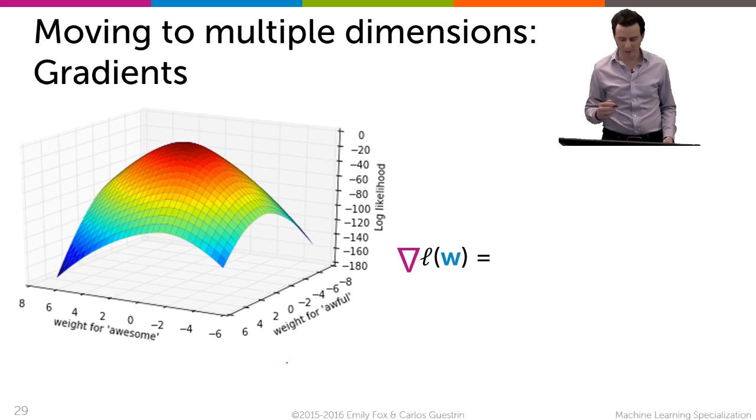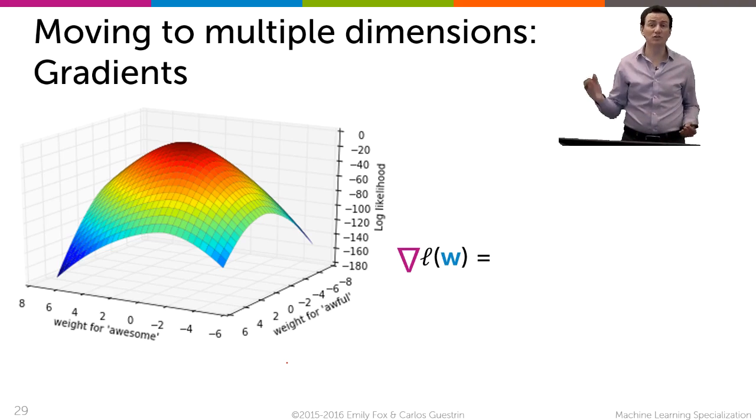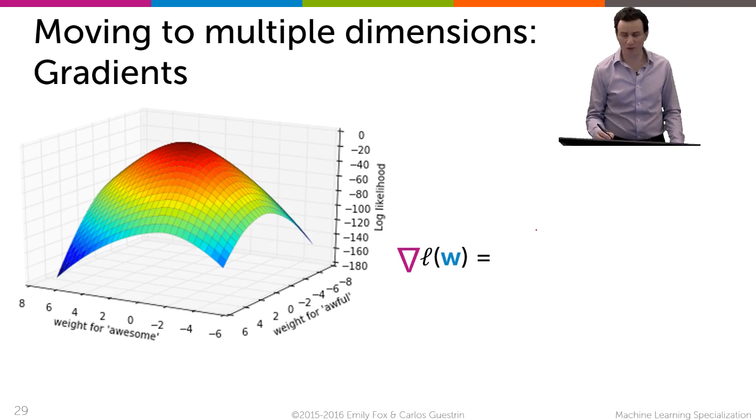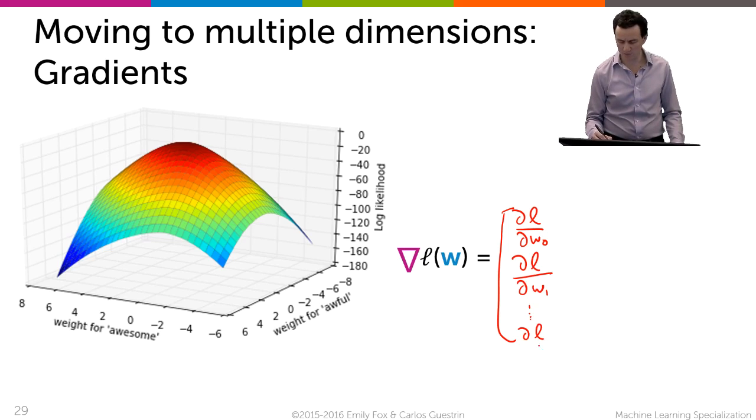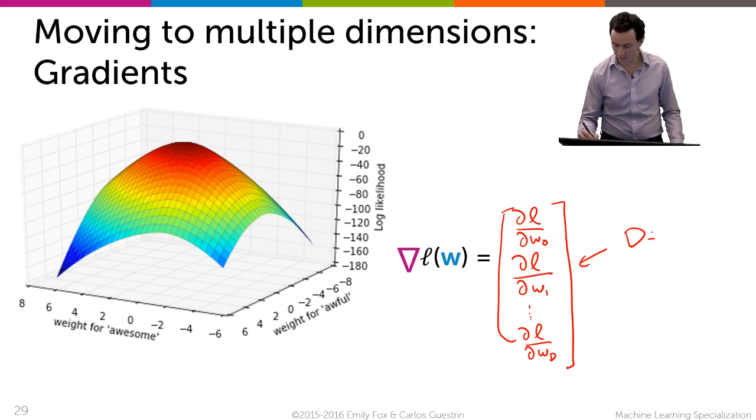Now that was for a one-dimensional space, but we have now a larger dimensional space because we can have thousands of coefficients we're trying to fit. So instead of computing a one-dimensional derivative, we need what's called a gradient. And the gradient is just a stacking here of the derivative of L with respect to the first parameter w_0, the partial derivative of L with respect to the second parameter w_1, all the way to the partial derivative with respect to the last parameter w_d. And so this is a d+1 dimensional vector for when you have d features.